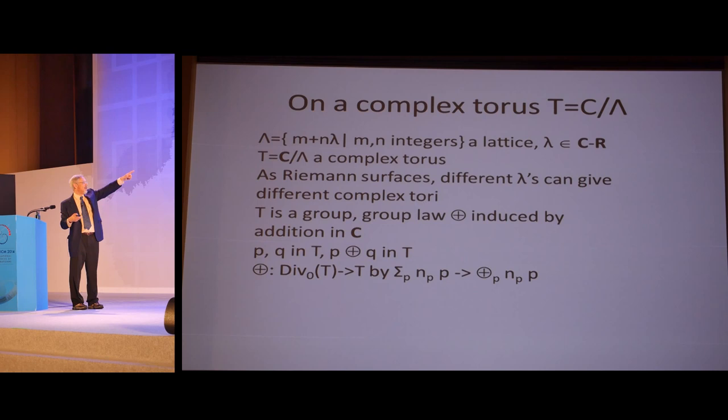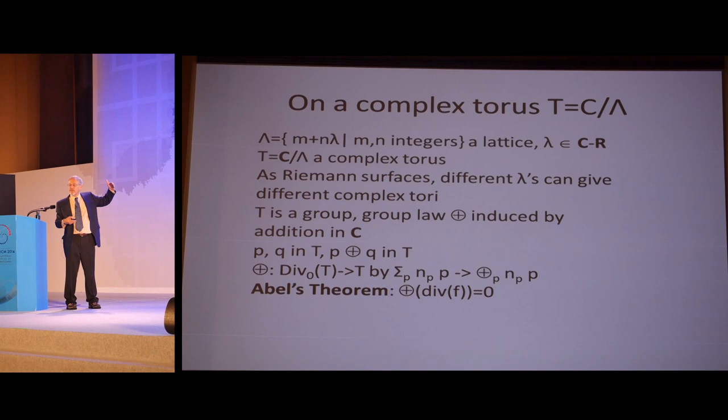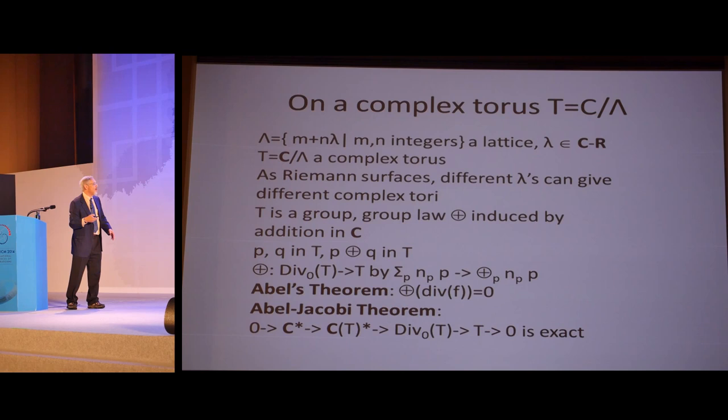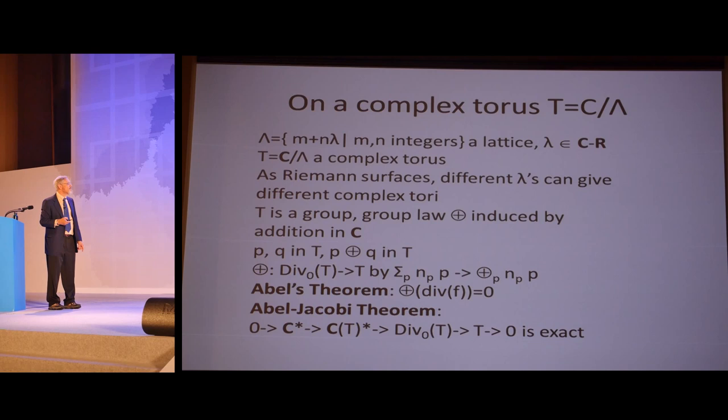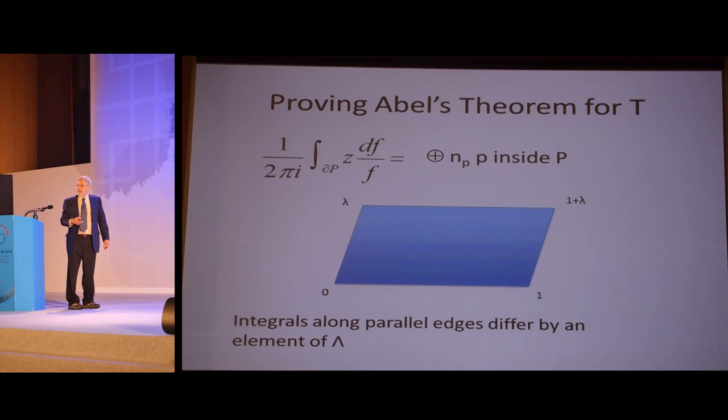You can apply this to divisors. If you have something of divisor to degree zero, you can just take summation NPP and add up in the torus counting multiplicity. Abel's theorem is that when you do this, the divisor of F has this extra condition beyond being of degree zero. The points with multiplicity have to add up to zero in the torus. The Abel-Jacobi theorem says that divisors of degree zero surject onto T. If you just integrate z df over f around the fundamental parallelogram, you'll rapidly see that that equals the sum of NPP by the residue theorem. But you can actually compute it and see that what you get is an element of the lattice.